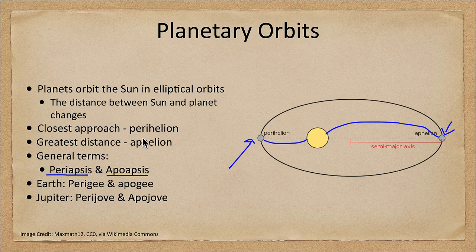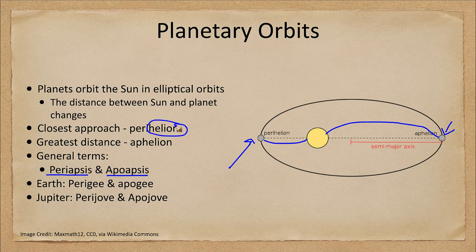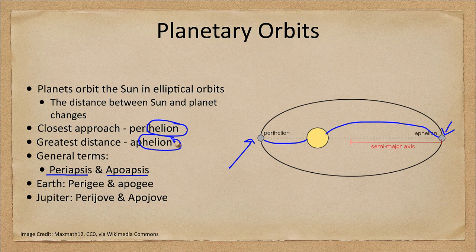Perihelion and aphelion, with the suffix helion for helios or sun, apply to things orbiting the sun.